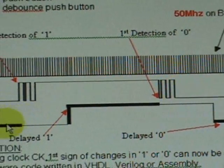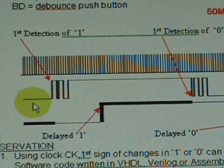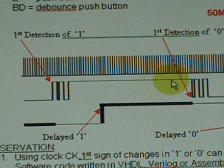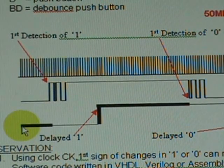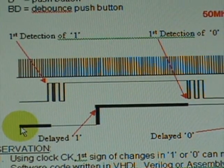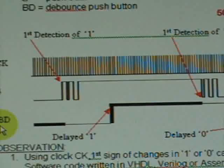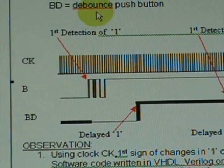So the purpose of a button debouncer is to represent a single push to be a clean push that we will designate as BD to represent debounce push button.